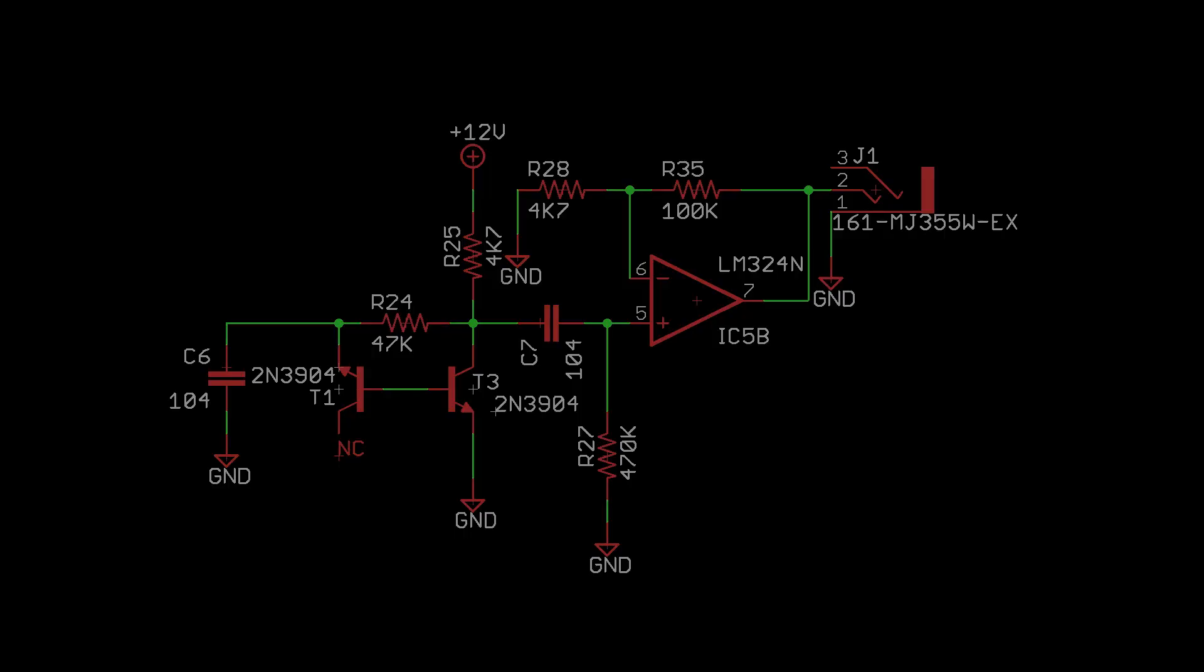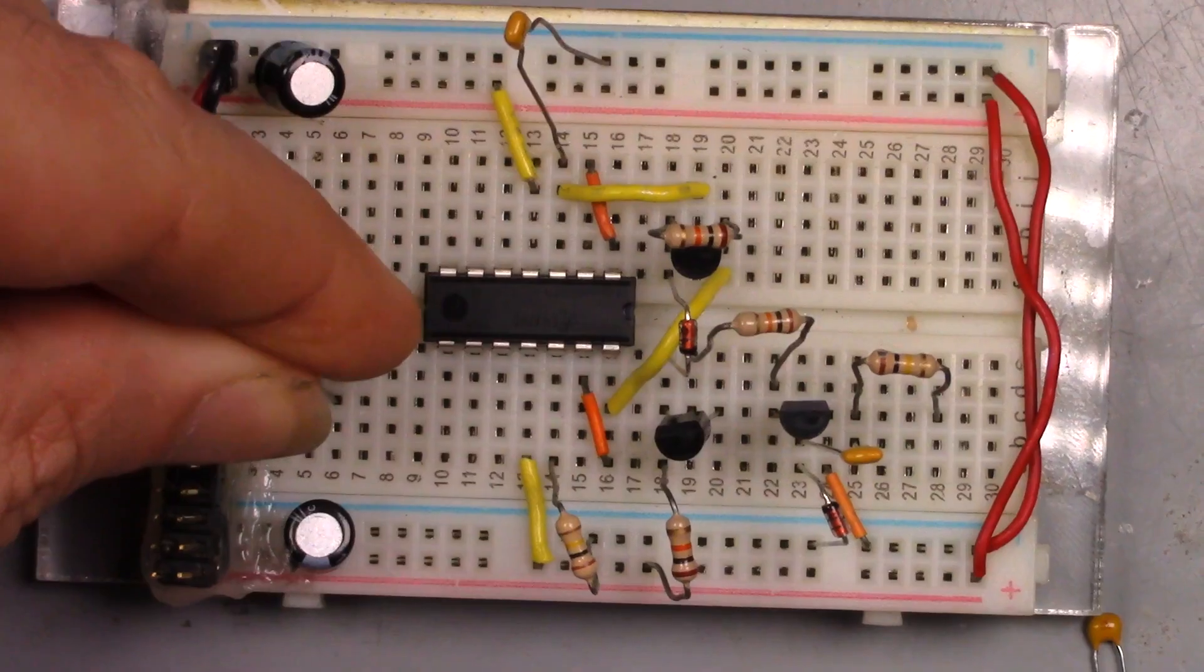Now that moving the existing circuit is done, we can add the components for the noise generator. First, let's place the two 3904 transistors on the board.